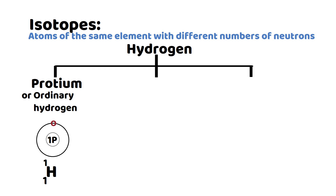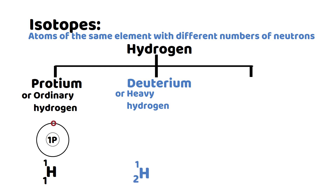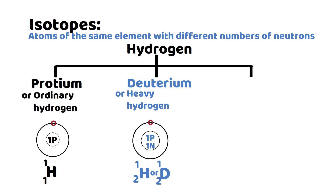The second isotope of hydrogen is called deuterium, or heavy hydrogen. This isotope is shown by the symbol H-1-2, or D-1-2. As the symbol shows, deuterium has one proton and one neutron in its nucleus, while one electron is present in the first shell of deuterium.